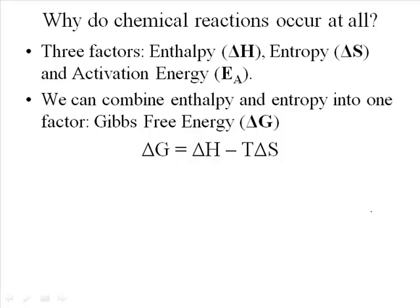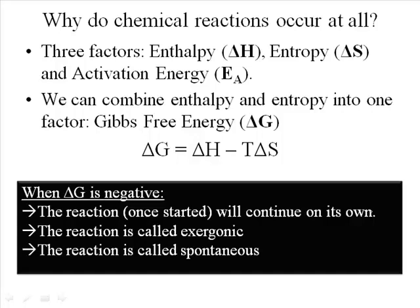What we look for in most chemical reactions, if they're going to occur at all, is a negative delta G value. A negative delta G value means that the reaction, as long as you get it started and provide the activation energy, will continue on its own. This is also called an exergonic reaction — it releases Gibbs energy from the reaction. In science, we actually call this a spontaneous reaction.